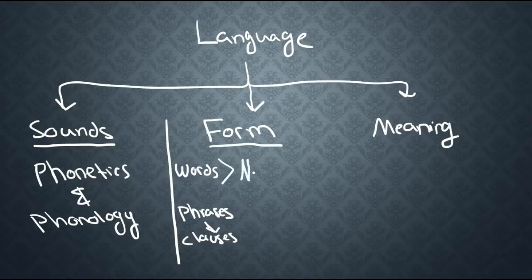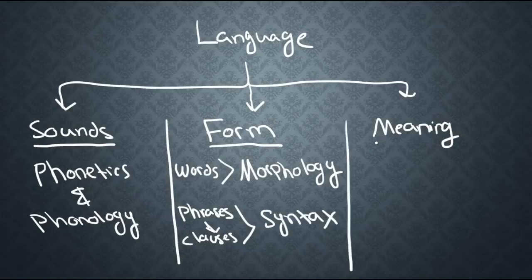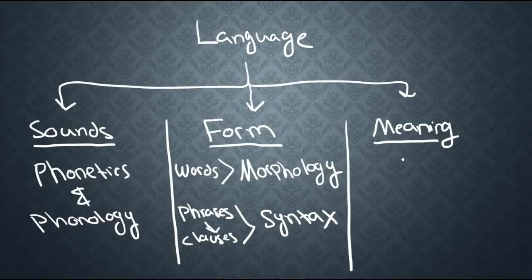So the part of linguistics that studies words is called morphology and the part that studies phrases and clauses is called syntax. Now we move on to the part that interests us in this course, which is meaning. Now meaning can come about basically on the sentence level or it can come about above the sentence level. So meaning is basically studied by two branches of linguistics, the first of which is semantics and the second of which is pragmatics.